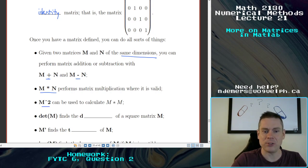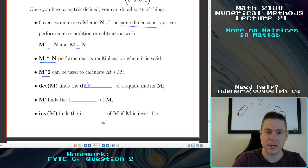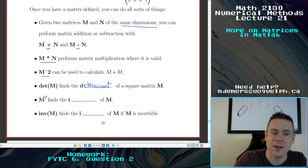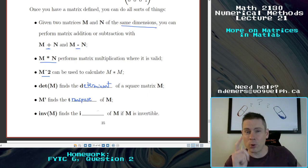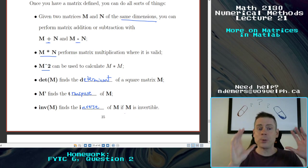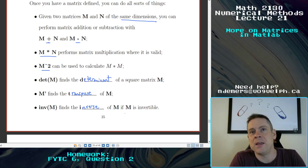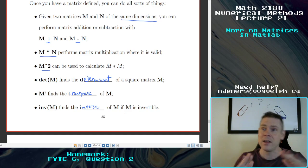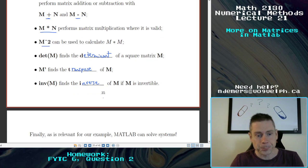M star N performs matrix multiplication where it's valid. So you need the right dimensions to match up in the right way in order to make sure that we can do this. The number of columns of the first one has to equal the number of rows of the second or else this operation is not defined. That's a fact from linear algebra. M squared can be used to calculate M times M. Of course, here, M has to be a square matrix. You can use det(M) to find the determinant of a square matrix. You can use an apostrophe right here to find the transpose of M, basically swapping rows and columns. And inv(M) finds the inverse of M if M is an invertible matrix.